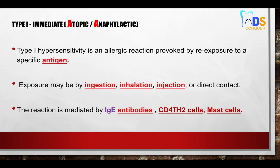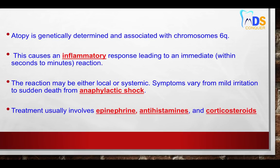Exposure for Type 1 can be via inhalation, injection, or ingestion. It is mainly mediated by IgE antibodies and partially by CD4 TH2 cells and mast cells. Atopy is a subtype of Type 1 and is genetically mediated, under the control of chromosome number 6 — which also codes for the HLA complex on its short arm. This causes an inflammatory response that can be immediate, occurring within seconds to two minutes.